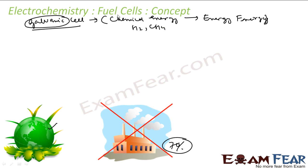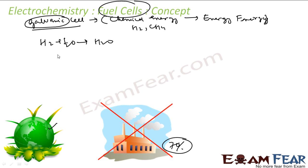Let's look at one combustion reaction: hydrogen reacts with oxygen to form water. This is a spontaneous reaction — delta G is less than zero. So if you keep hydrogen and oxygen nearby, they will form water and generate some heat energy.